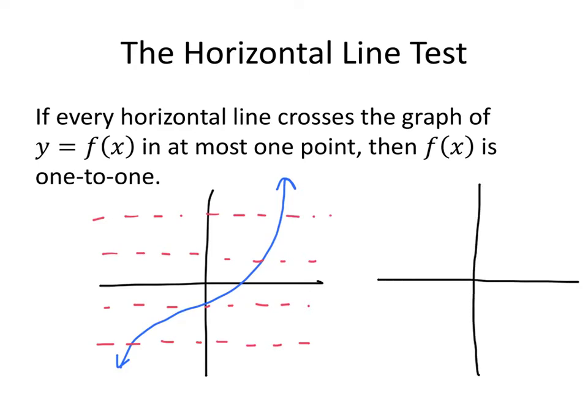But if I draw a function something like this... Now, some of those horizontal lines are okay. This one doesn't cross my graph at all, which is okay. This one crosses my graph exactly once. That's okay. But this horizontal line crosses my function four times. Here, here, here, and here. So that means that this function is not a one-to-one function. So this one is one-to-one, but this one is not.